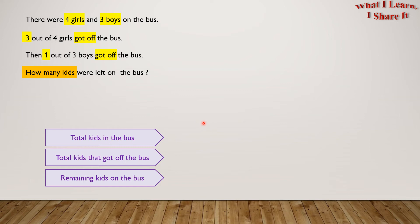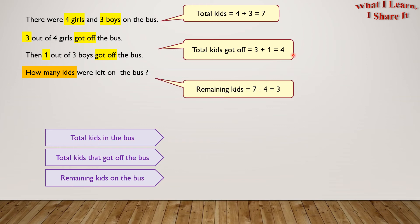So how many were the total kids? The total kids were 4 plus 3 equals 7. The total kids that got off the bus were 3 plus 1 equals 4 kids. So the remaining kids would be 7 minus 4 equals 3 kids. So 3 kids were left on the bus.